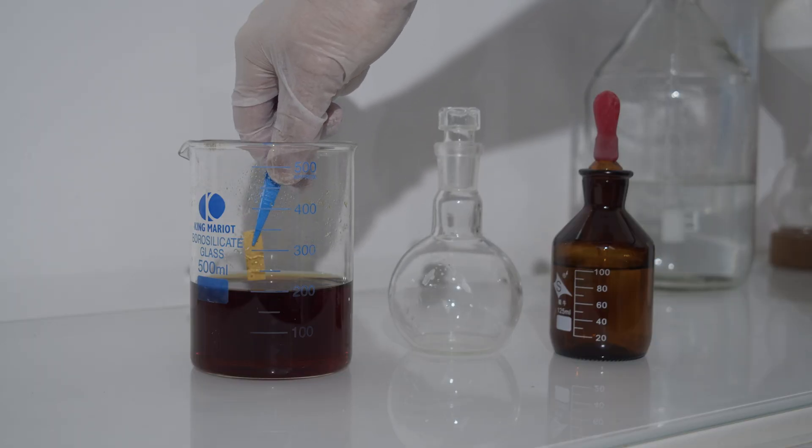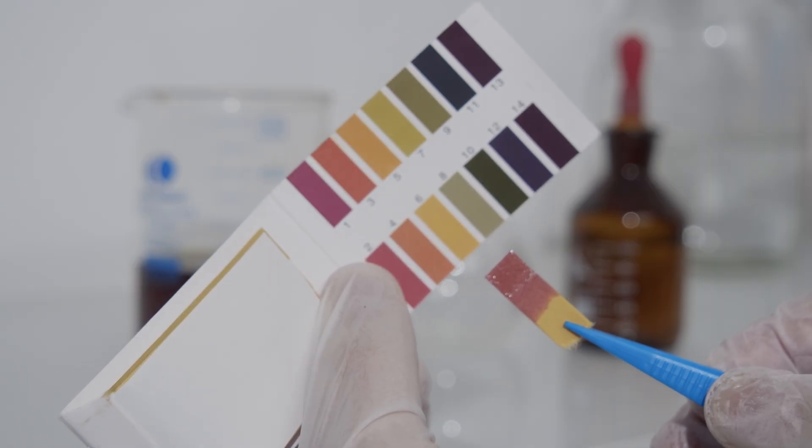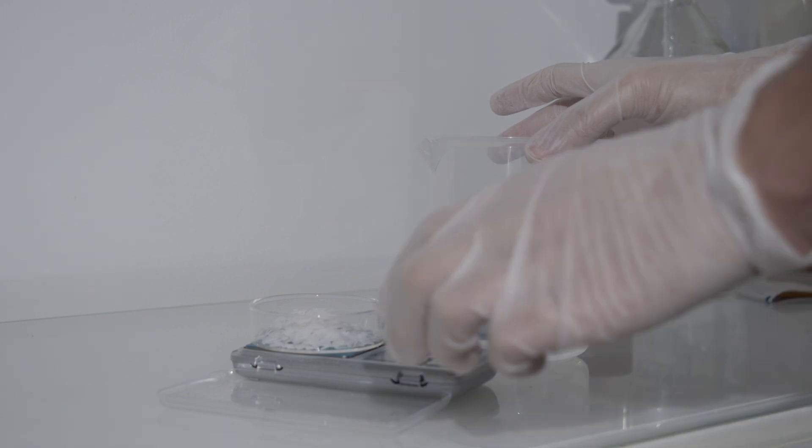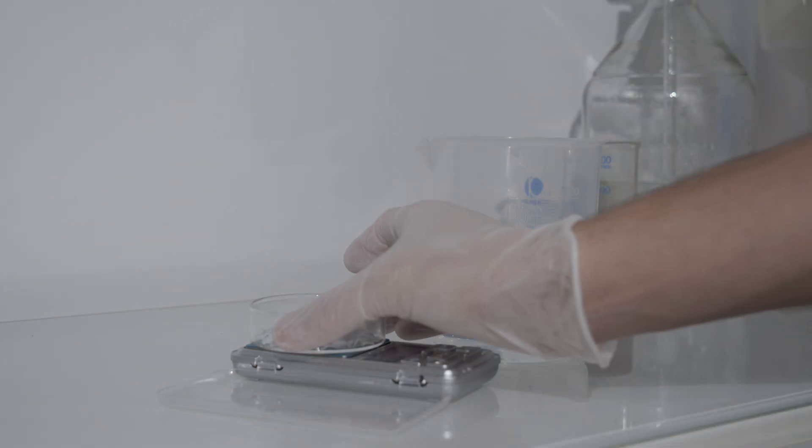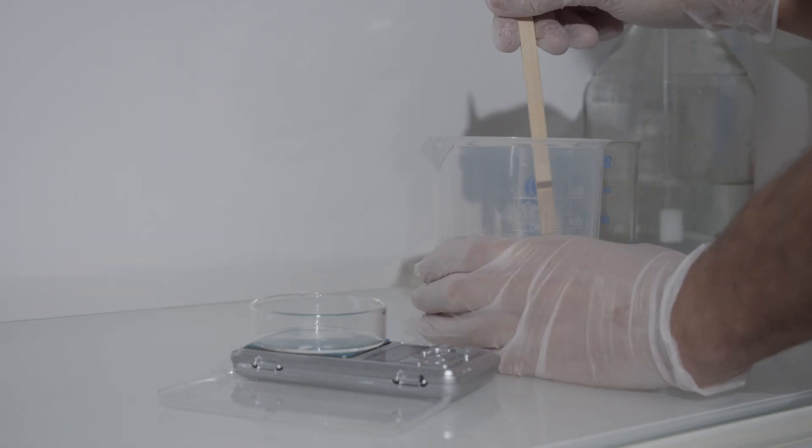After oxidation, we test the pH of the iron 3 sulfate solution and it was highly acidic. To neutralize it and precipitate the iron hydroxide, we prepare a solution of potassium hydroxide in water by dissolving around 10 grams of potassium hydroxide into 100 milliliters of distilled water.